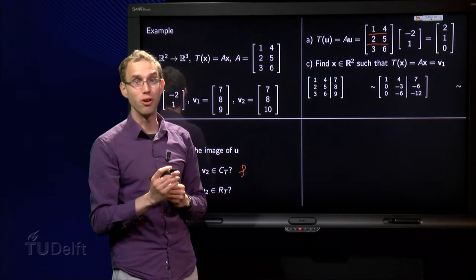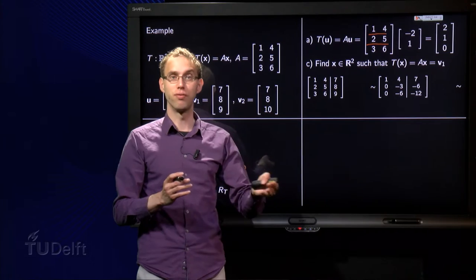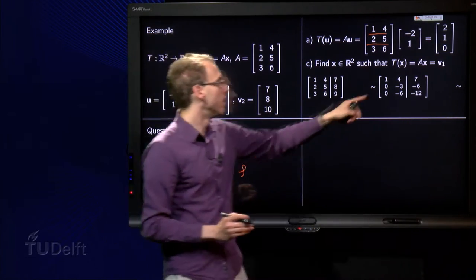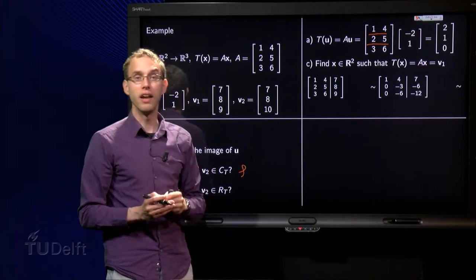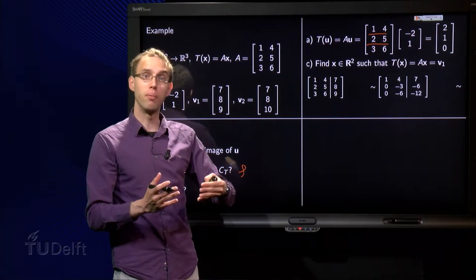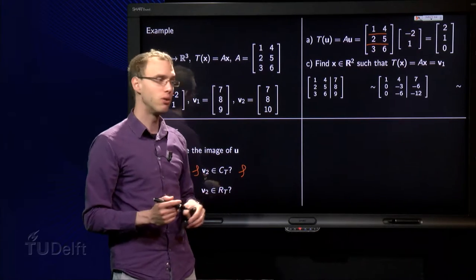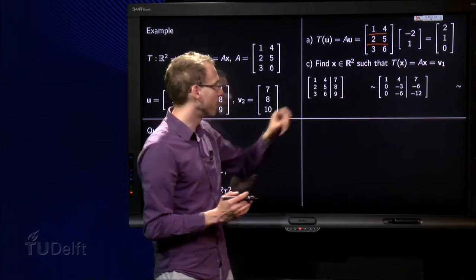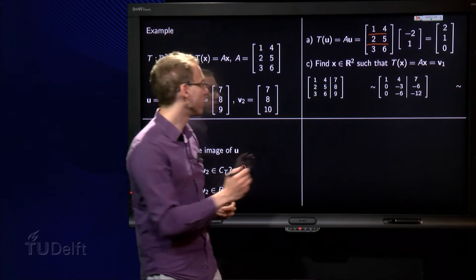Ah, but you know how to solve this. Now we have a problem of the form Ax equals b, where A is given, x is unknown, and b is given, where b is in this case v1. You can solve it by forming the augmented matrix and using row reduction. So we augment A with v1 and we start the row reduction.